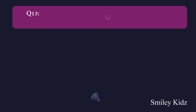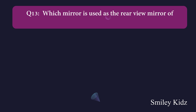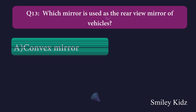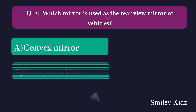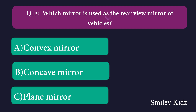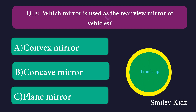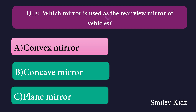Question number thirteen: Which mirror is used as the rear view mirror of vehicles? Option A: convex mirror, Option B: concave mirror, Option C: plane mirror. The right answer is convex mirror. Convex mirror is used as the rear view mirror of vehicles.